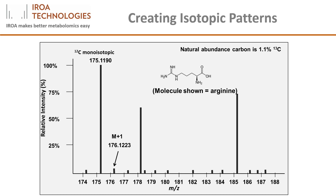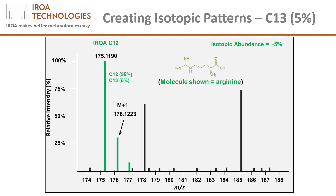However, this M plus 1 peak will always be found exactly 1.00335 AMU — that is the mass of a neutron — away from the C12 monoisotopic peak.